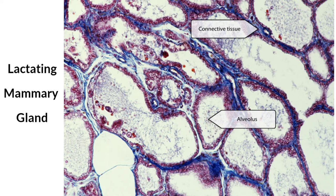During lactation, the myoepithelial cells contract and the alveoli secrete milk into the lactiferous ducts that carry it through openings in the nipple. Beneath the areola of the breast, each lactiferous duct forms a lactiferous sinus, which serves as a reservoir for milk during nursing.